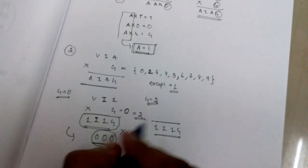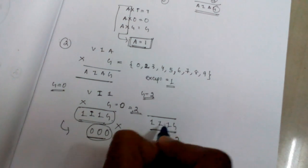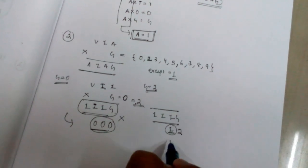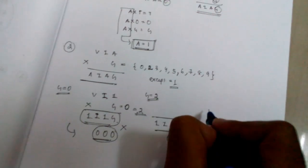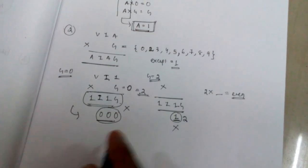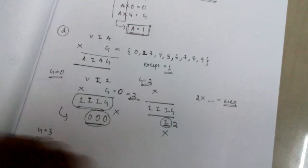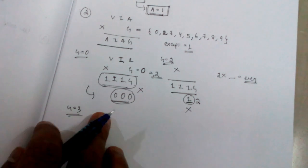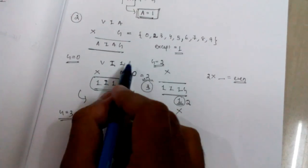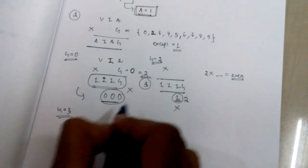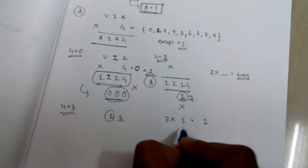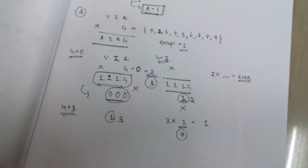When G equals 2: two into one gives two, but two into any number gives an even number. The middle digit of AIAG should be 1, which is odd, so G equal to 2 is not possible.